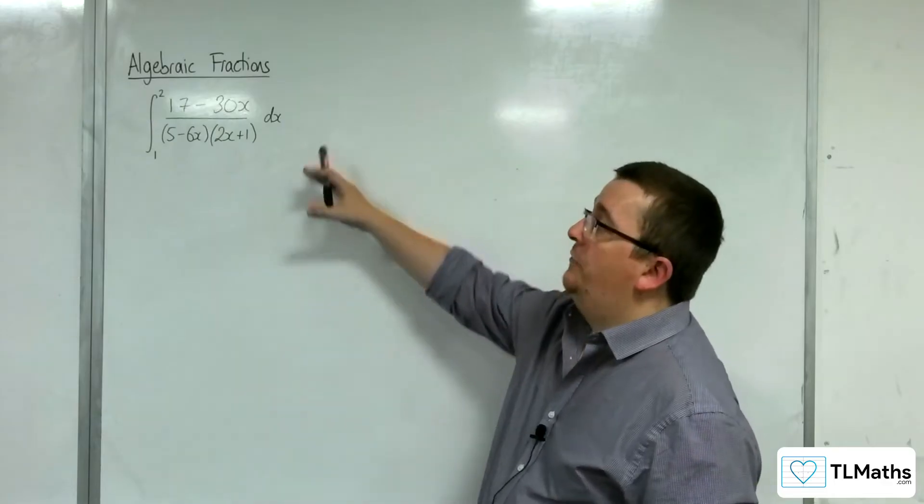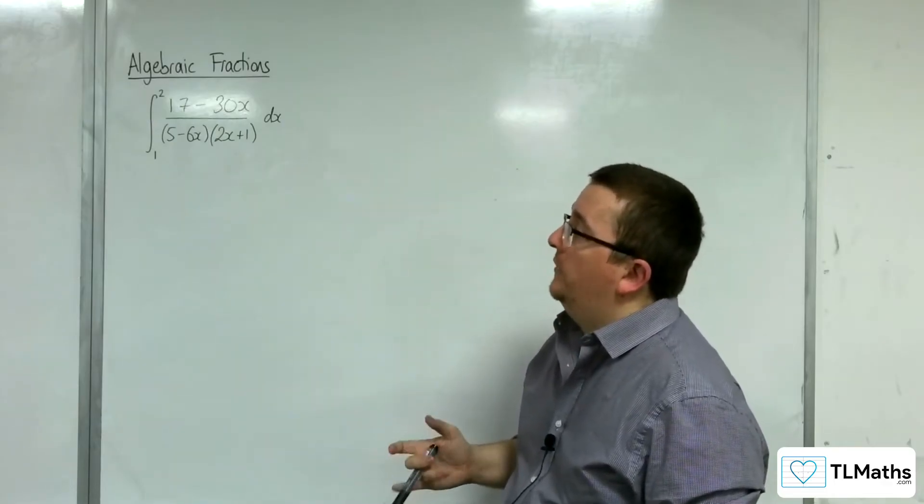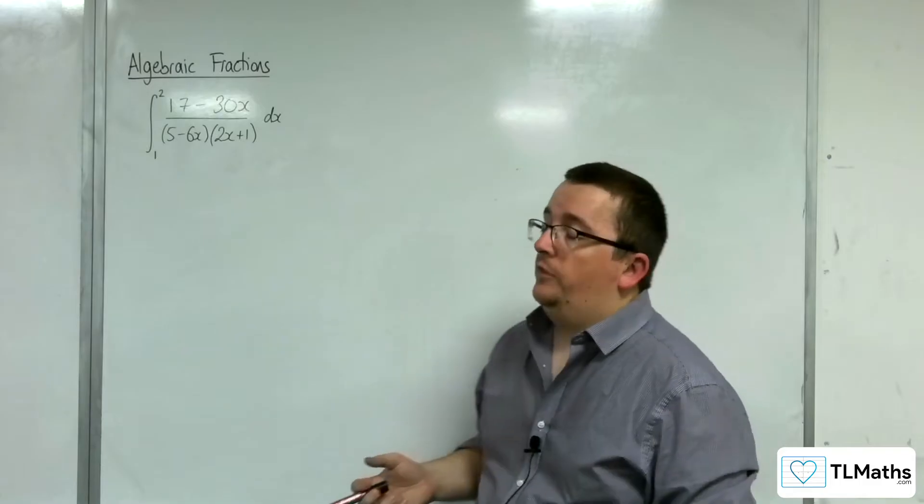Let's say I wanted to find the exact value of the integral between 1 and 2 of 17 take away 30x over 5 take away 6x, 2x plus 1.